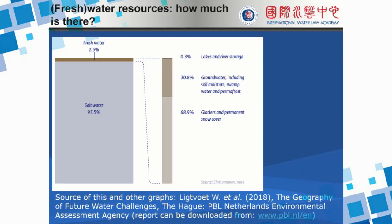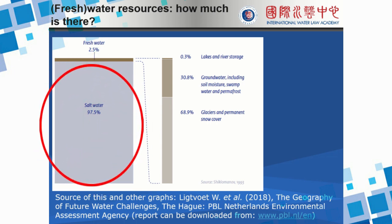So where is our freshwater located? It's important to keep in mind that 98% of the world's water is situated in the oceans and seas — so it's salt water. And international water law, the topic of these lectures, does not concern itself with salt water. So 98% of the world's water is not regulated by international water law and is not the topic of the present lectures.